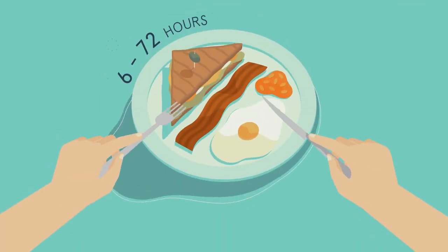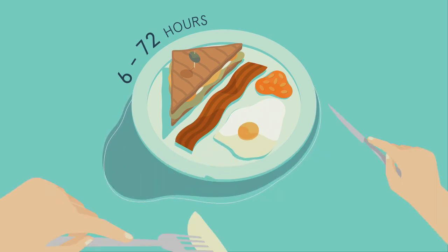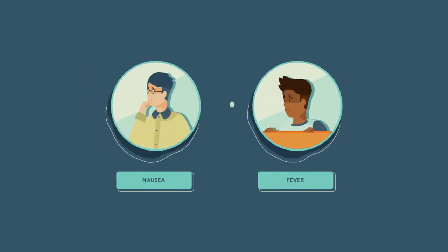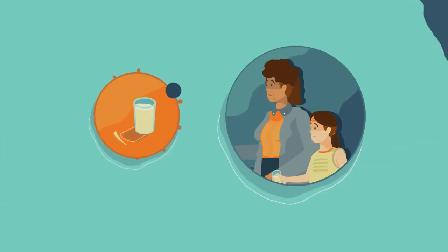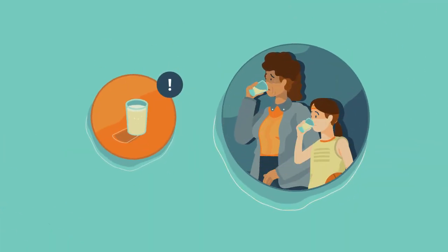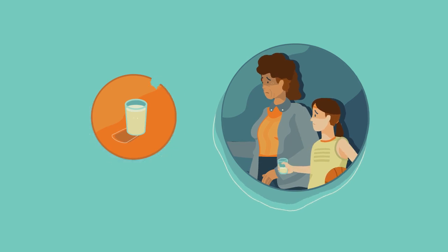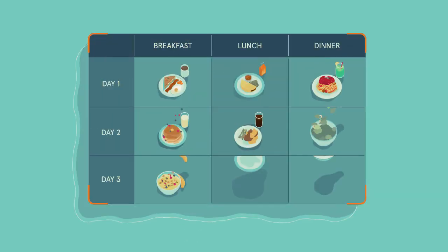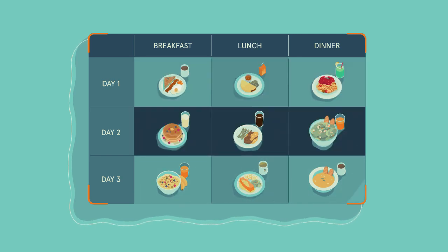Symptoms begin 6 to 72 hours after consumption and include diarrhea, abdominal cramps, fever, nausea, and vomiting. Dehydration is a concern, especially in the elderly and young children. Ask your healthcare provider to take a stool sample. Document what you have eaten in the past 72 hours.